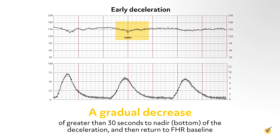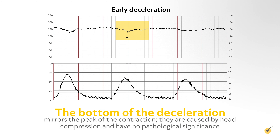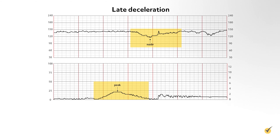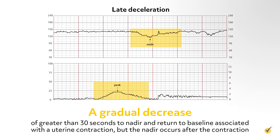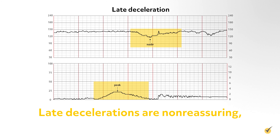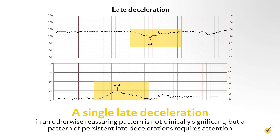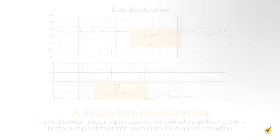Fetal tachycardia is defined as a baseline heart rate of 160 beats per minute or greater, lasting 10 minutes or more. The cause is usually related to maternal fever or infection in the mother, fetus, or both. Most importantly, tachycardia may be a sign of early fetal hypoxemia. Fetal bradycardia is defined as a baseline heart rate less than 110 BPM, lasting more than 10 minutes. If adequate variability is present, bradycardia may be normal for the fetus. However, if it persists below 90 BPM for more than 10 minutes, average variability is less likely to be present. Loss of variability and late decelerations with bradycardia may be predictive of current or impending fetal hypoxia.